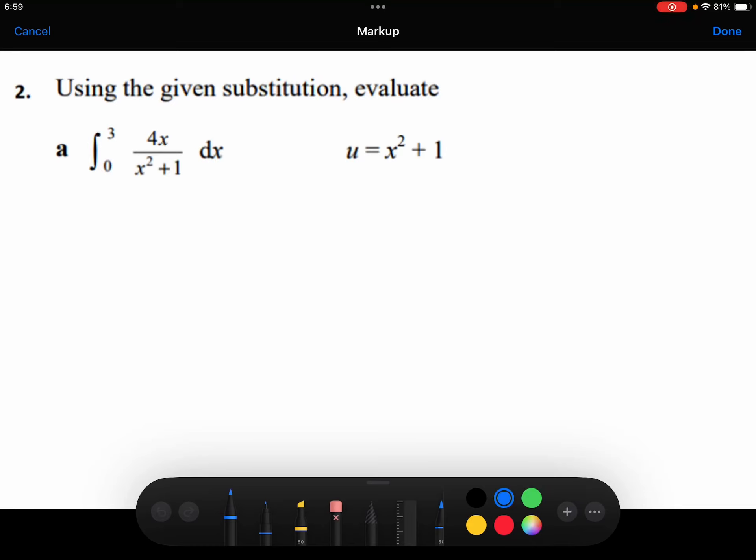I'm going to start by differentiating my substitution. So du by dx is equal to 2x and the 1 will differentiate to be 0. Rearrange to make dx the subject.